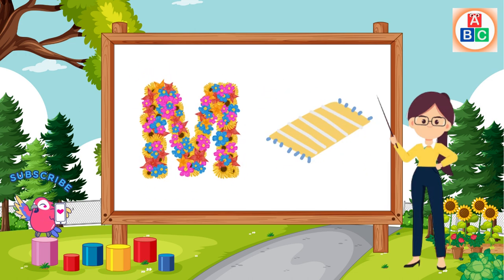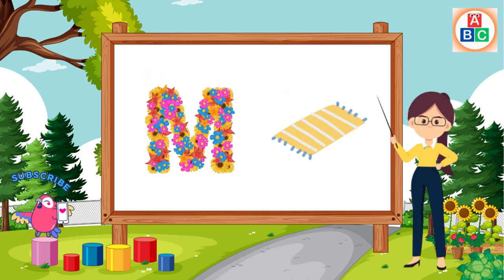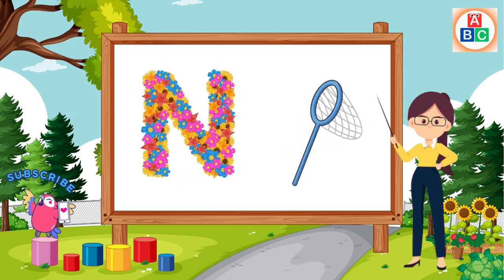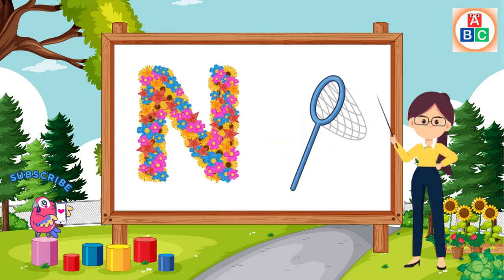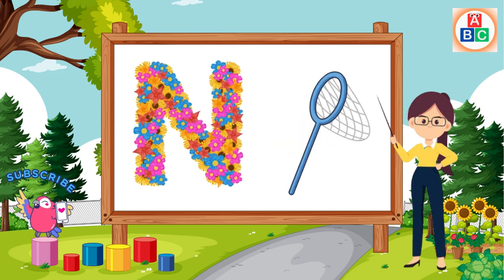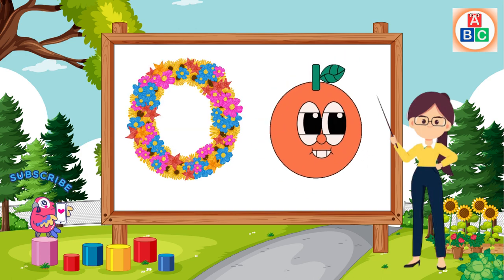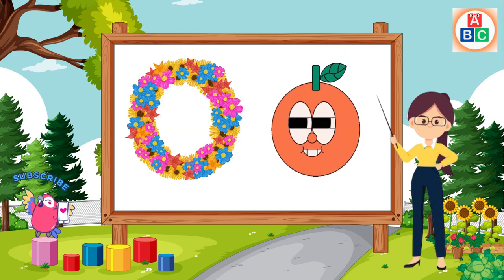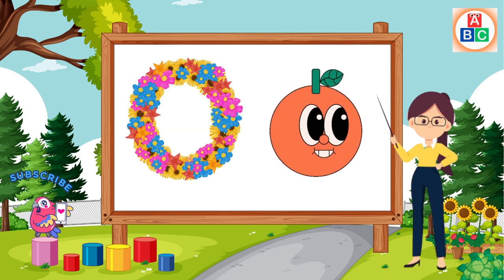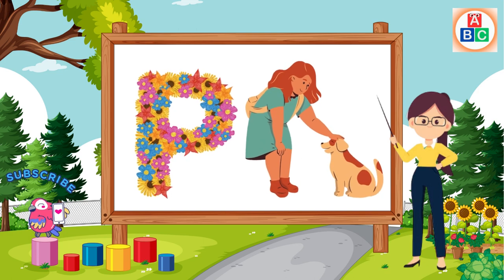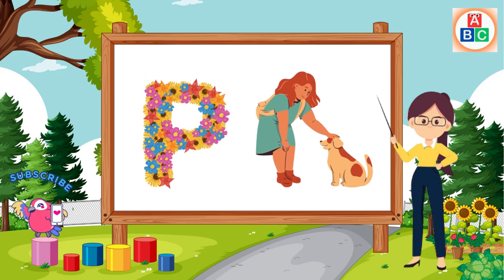M is for mat, m-m-mat. N is for net, n-n-net. O is for orange, o-o-orange. P is for pet, p-p-pet.